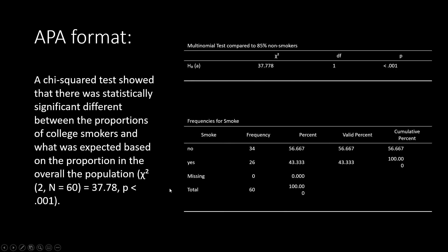For our other example, we did have statistical significance, so I convey that to the reader. As before, I enter my chi-squared symbol, degrees of freedom, sample size, chi-squared value, and p-value. This is how we write up a one-way chi-squared test in APA format. Thanks for watching — see you next time.